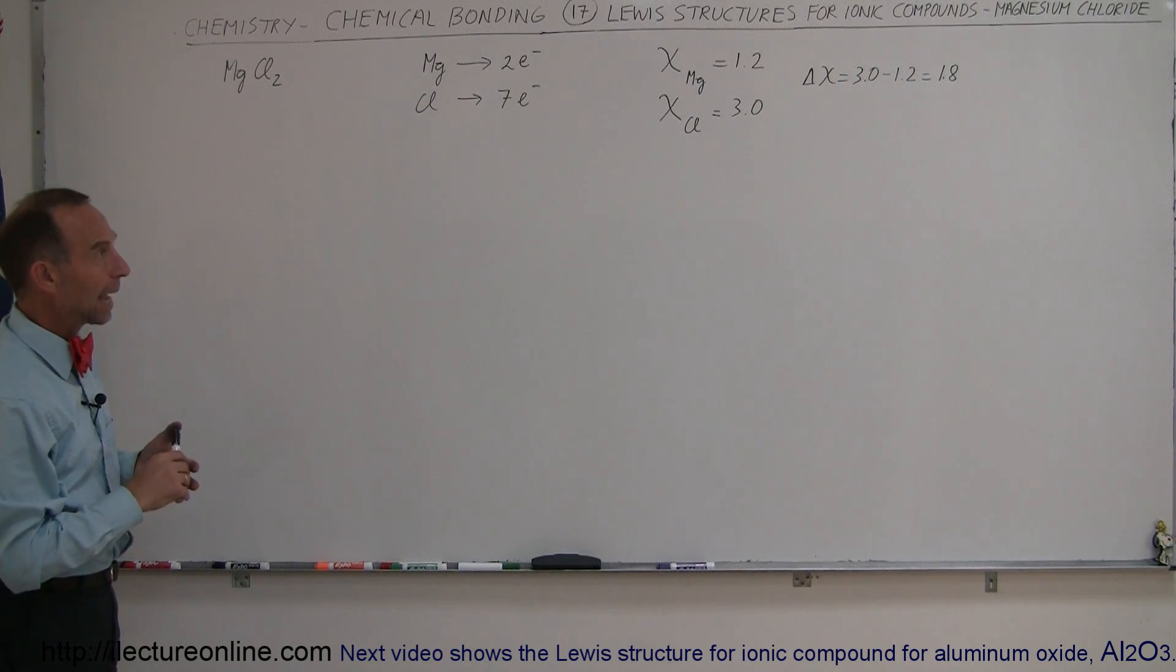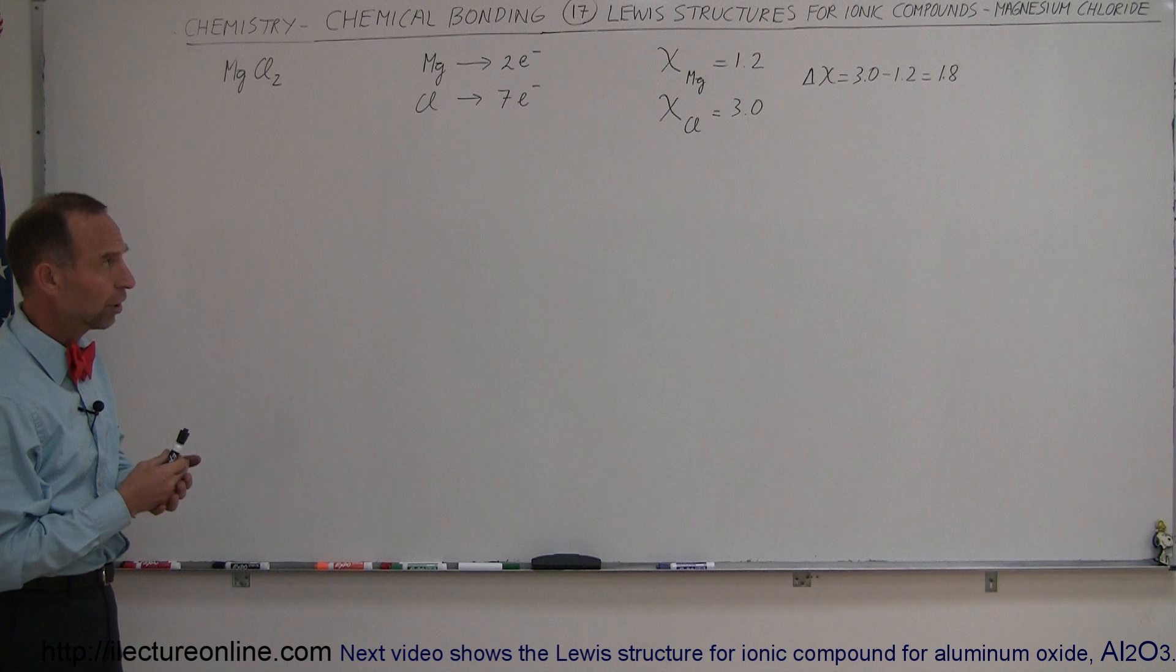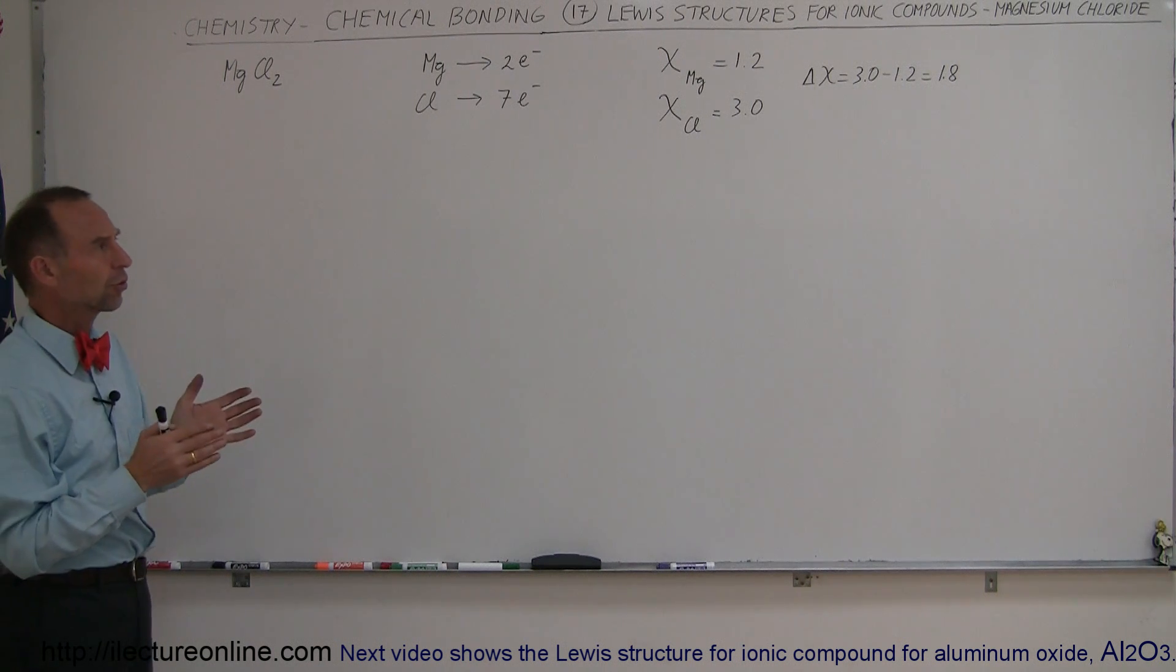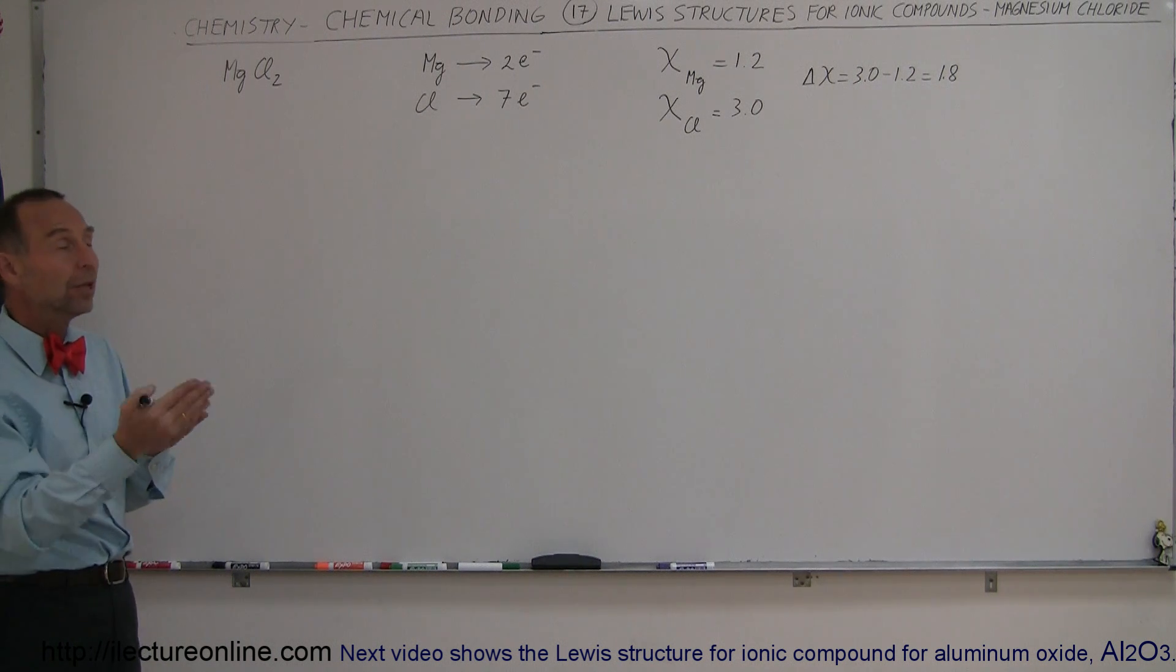And in this case, we're going to take another look at another example for an ionic compound and the Lewis structure of such. Now, the Lewis structure, you will notice, looks a little bit different than your typical Lewis structure, where we're simply indicating that electrons have been exchanged from one atom to the next.